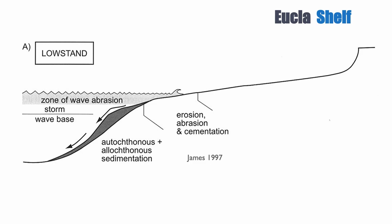Let's look at the classic example of a C factory. This is the Euclid shelf, and this is work done by Noel James in the 90s. He suggests that in the C factory, because we lack mud and we lack early cement, we lack the ability to really lithify the lithologies soon after deposition.